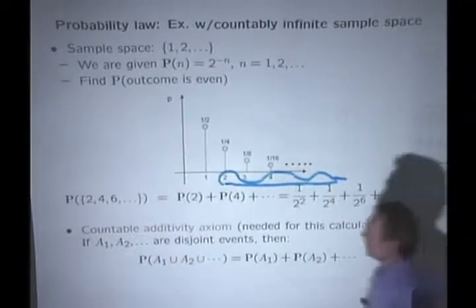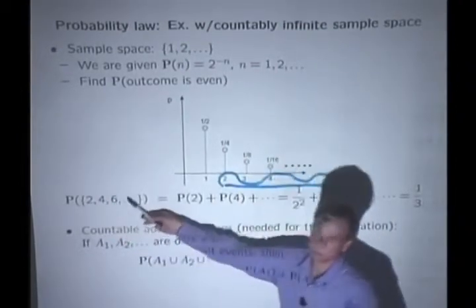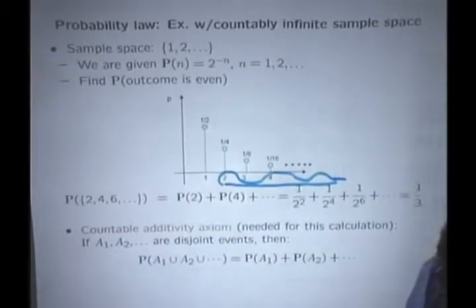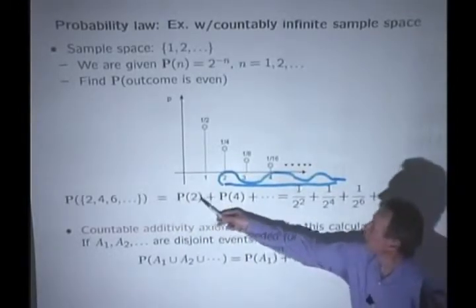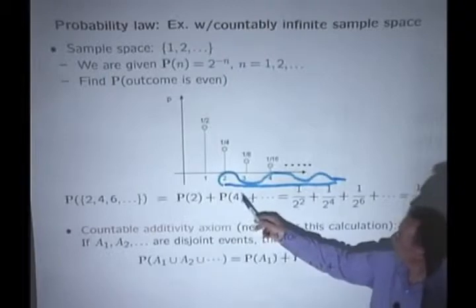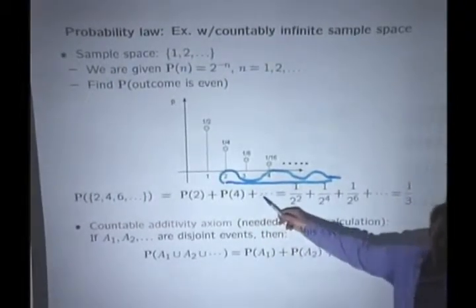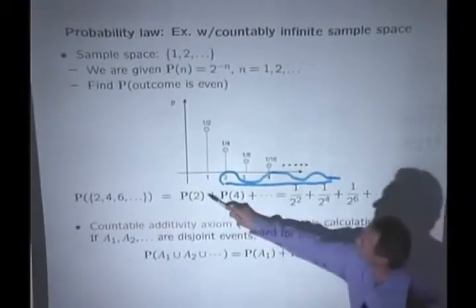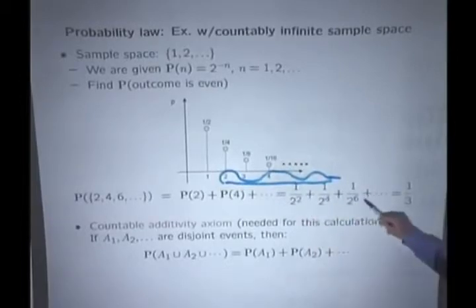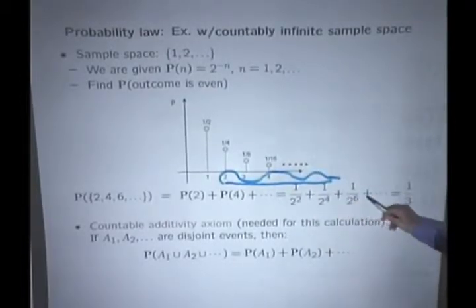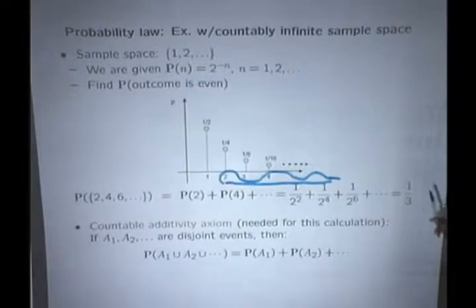So any reasonable person would say, well, the probability of obtaining an outcome that's either 2 or 4 or 6 and so on is equal to the probability of obtaining a 2 plus the probability of obtaining a 4 plus the probability of obtaining a 6 and so on. These probabilities are given to us, so here I have to do my algebra, I add this geometric series, and I get an answer of 1 third.